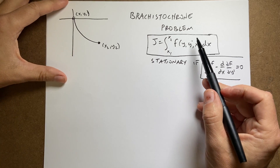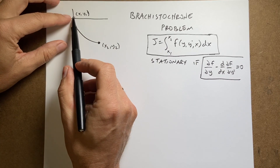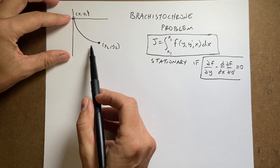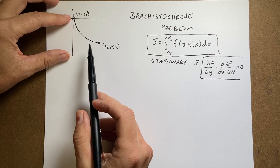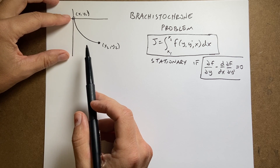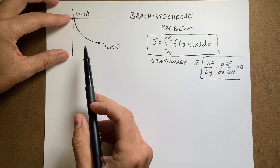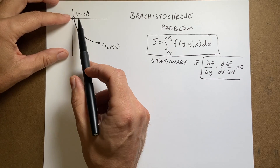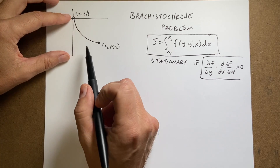Let's start with the fundamental idea here. Because we don't want to find the minimum of a value at a point — we want to find the path that gives the minimum time. So it's not a normal maximum problem; it's something different. This is the calculus of variations.